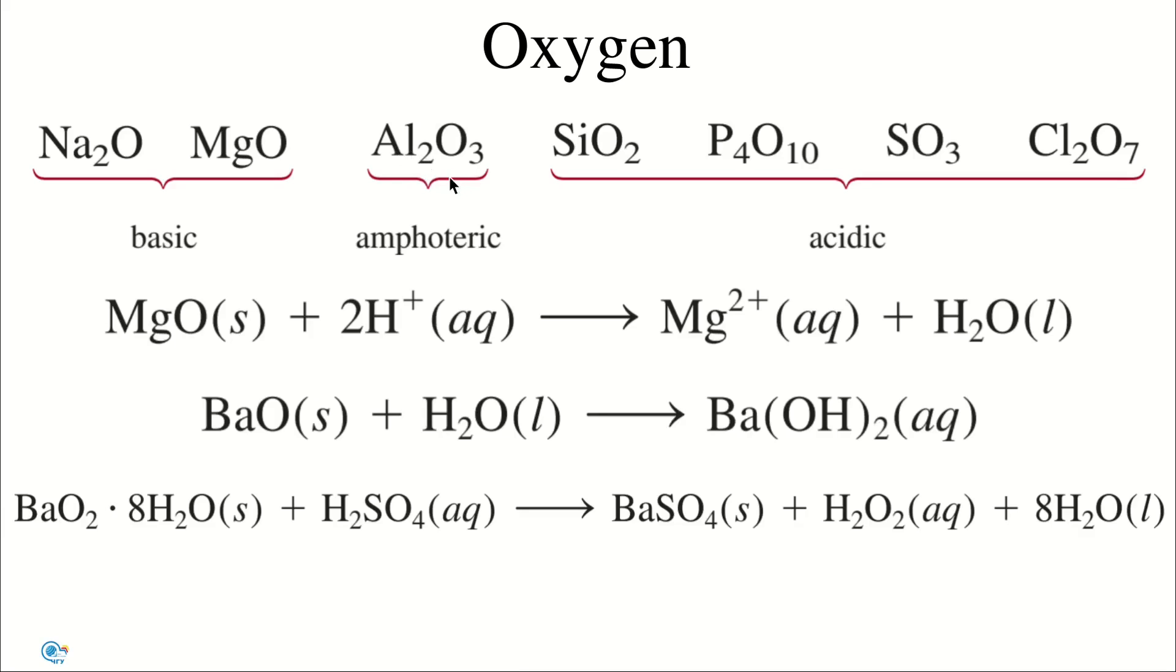These third period elements have amphoteric oxides. The basicity of oxides increases as we move down a particular group. For example, magnesium oxide doesn't react with water but reacts with acids, but barium oxide, which is more basic, undergoes hydrolysis to yield the corresponding barium hydroxide.